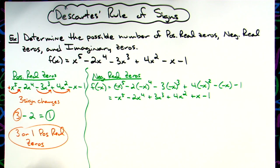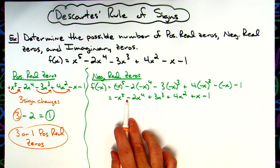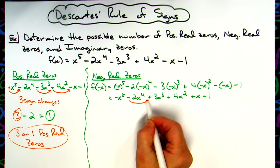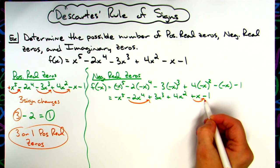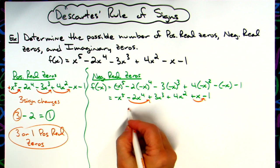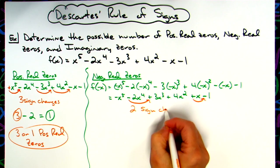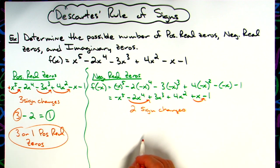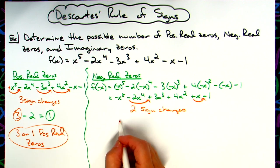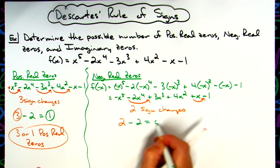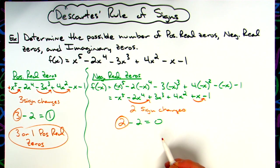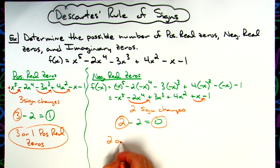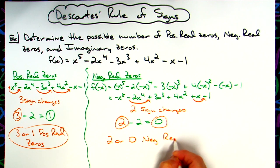When checking for negative real zeros, you plug in negative x into the function and simplify it, then look for sign changes. Here it goes negative to negative — nothing. Negative to positive — yes, that's a sign change. Positive to positive is not. Positive to positive is not. And then positive to negative is a sign change. So on this one I have two sign changes. We take two and subtract two, which gives us zero. So our choices are either two negative real zeros or zero negative real zeros.